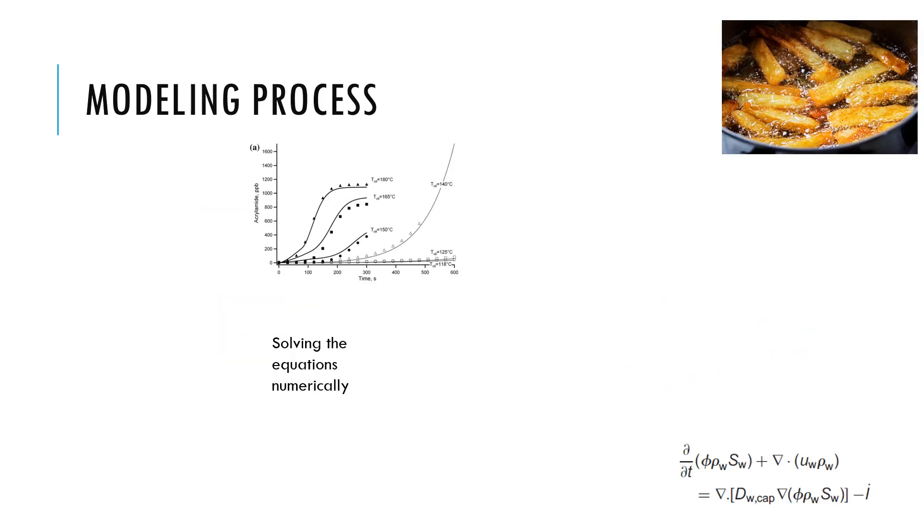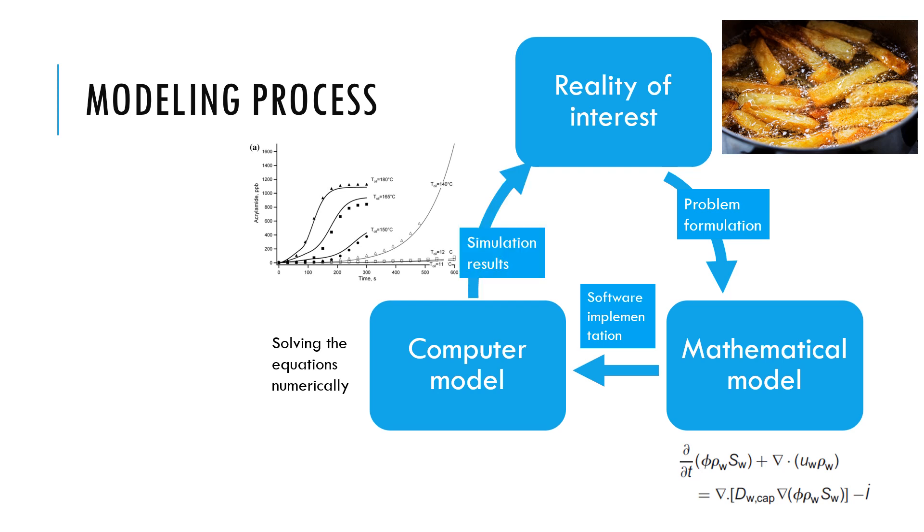We are implementing the mathematical model to be solved in the computer. We're calling that the computer model. We make errors in this step, and we want to keep these errors to a minimum. There are formal ways to try to reduce this error, for example something called mesh convergence. The software implementation step is not a trivial one either.